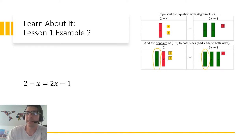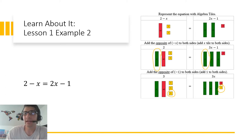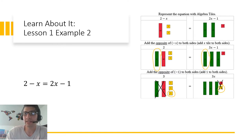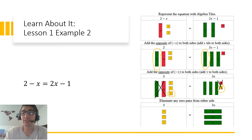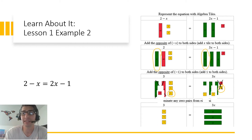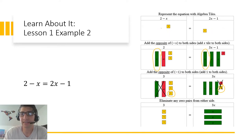The right-hand side now has three green x tiles but also a negative 1, so I'm going to add the opposite of negative 1 to both sides to eliminate it. I can now eliminate my zero pairs: on the left, x and negative 1x add to 0; on the right, negative 1 and positive 1 add to 0. I'm left with 3 on the left and 3x on the right, meaning each green x is worth 1. Substituting back into the original equation confirms a true statement: 1 equals 1. I have found the solution.